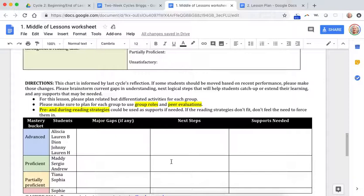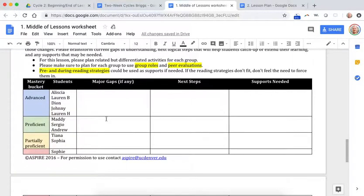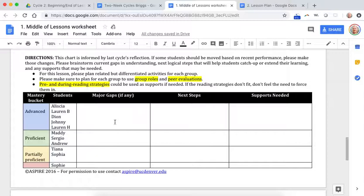And then the next activity is then I took your reflection about student growth and I sort of bucketed the students into those mastery buckets. What I want you to do is with this group sort of spell out any major gaps that they share that you really want them to work on, that you know they have to have time with.